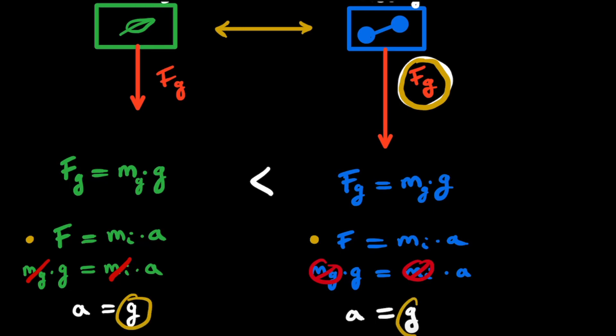So both objects accelerate towards the ground with the same acceleration, namely roughly 10 meters per second squared, or the gravitational constant. To put it into words: sure, the gravitational force pulls harder on the heavier object. However, a heavier object also needs more force to accelerate. Because the inertial mass and the gravitational mass are equal to each other, these two effects balance each other out — it is pulled by a larger gravitational force, but that is exactly what is needed because it is a heavier object requiring more force to accelerate.